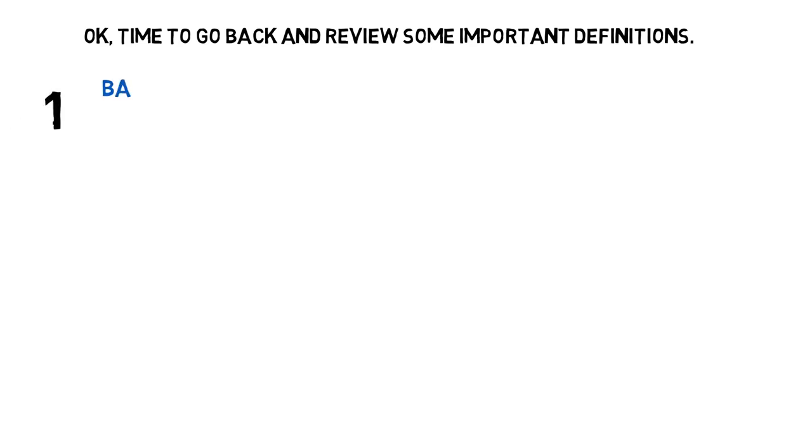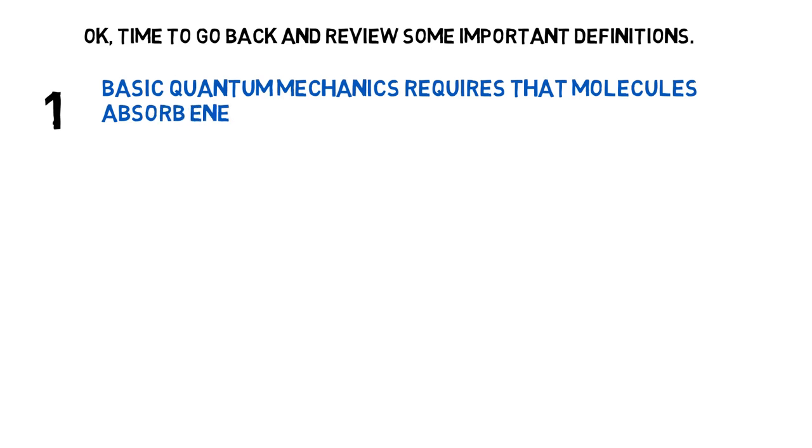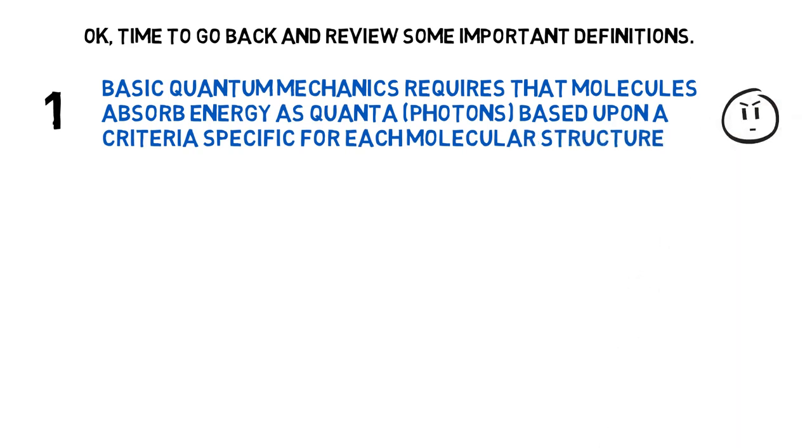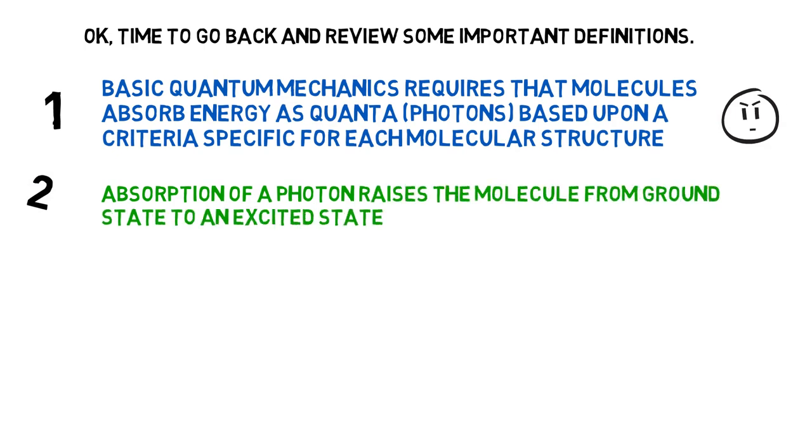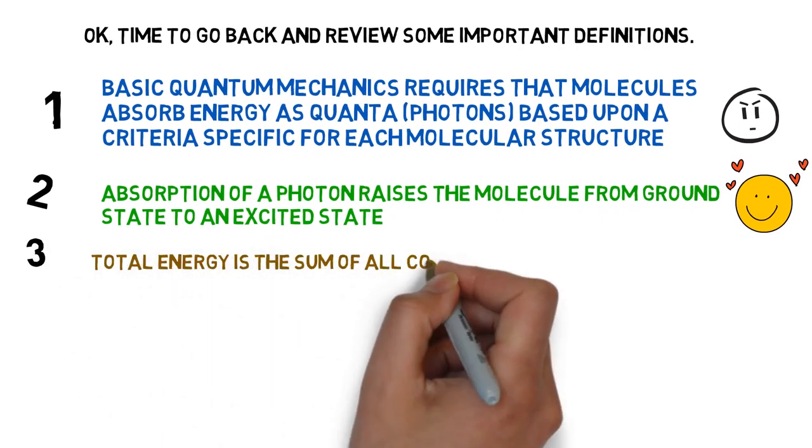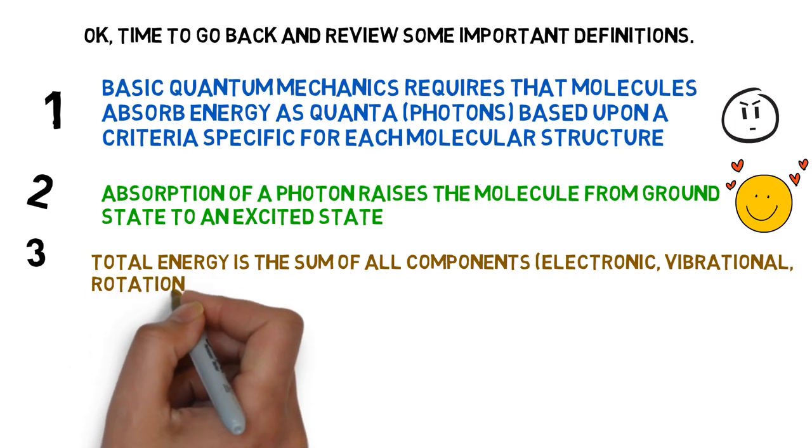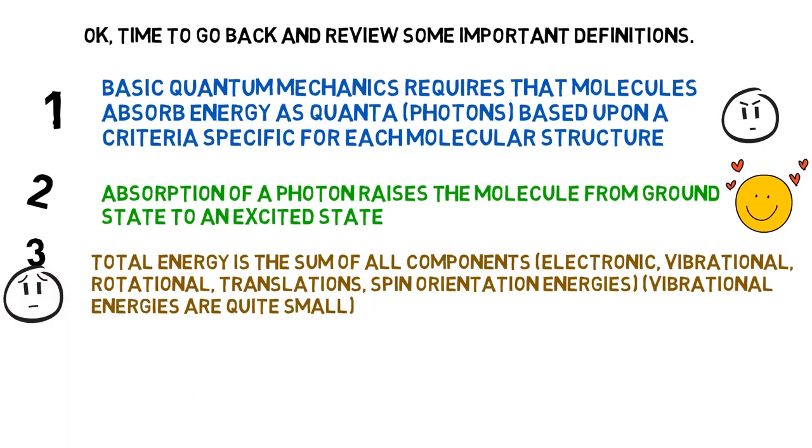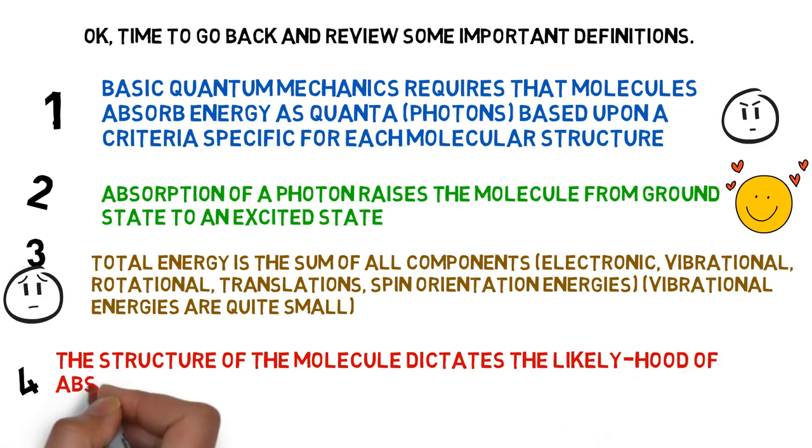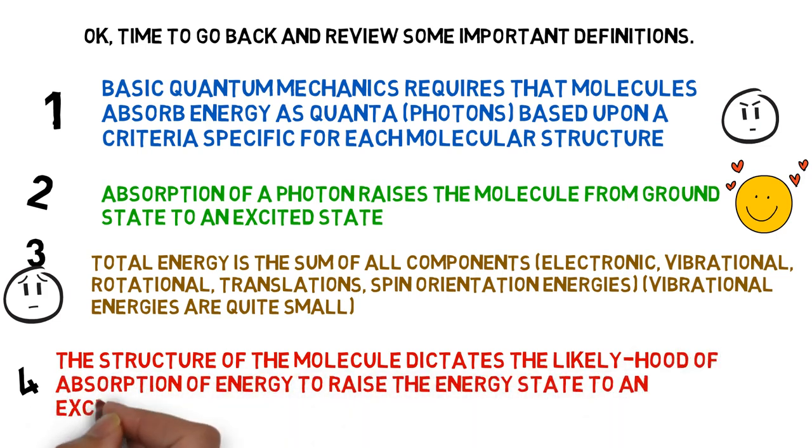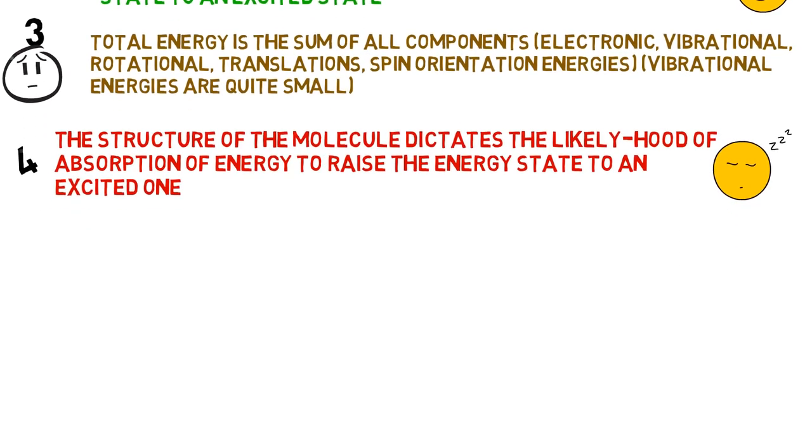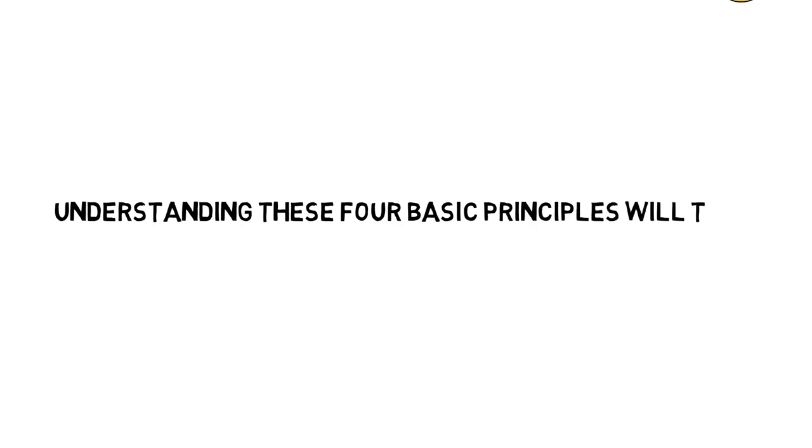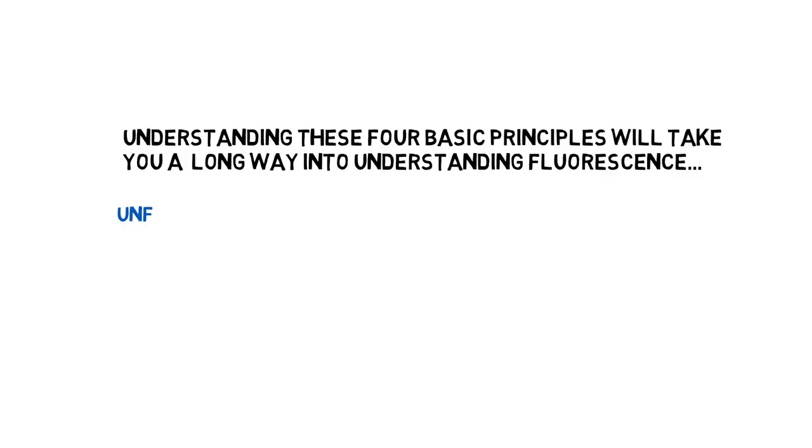Okay, time to go back and review some important definitions yet again. First, basic quantum mechanics requires that molecules absorb energy as quanta, or photons, based upon a criteria specific for each molecular structure. Second, absorption of a photon raises the molecule from ground state to an excited state. And third, the total energy is the sum of all components, the electronic, the vibrational, rotational, translation, spin orientation energies. All of these, even though vibrational energies are really quite small. And fourth, the structure of the molecule dictates the likelihood of absorption of energy to raise the energy state to an excited one. If you can grasp these four basic principles, it'll take you a long way towards understanding fluorescence.